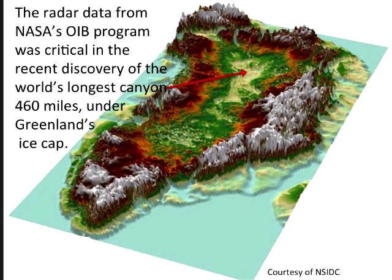Mark wants to know: does a lake show up on MCORDS as a flat or smooth bottom? Actually, they often show up as a flat top, because the ice on top of the lake reflects the topography of the lake itself, which of course is flat. That's one way they found these things in Antarctica — to look for flat surfaces.